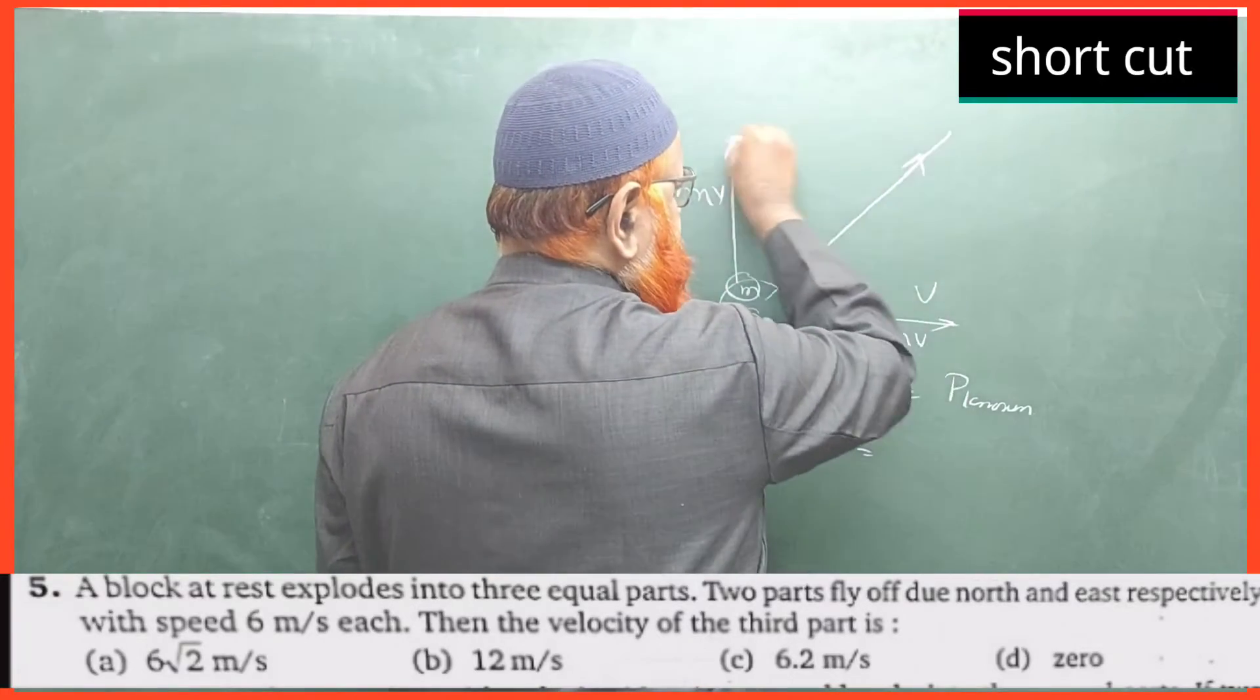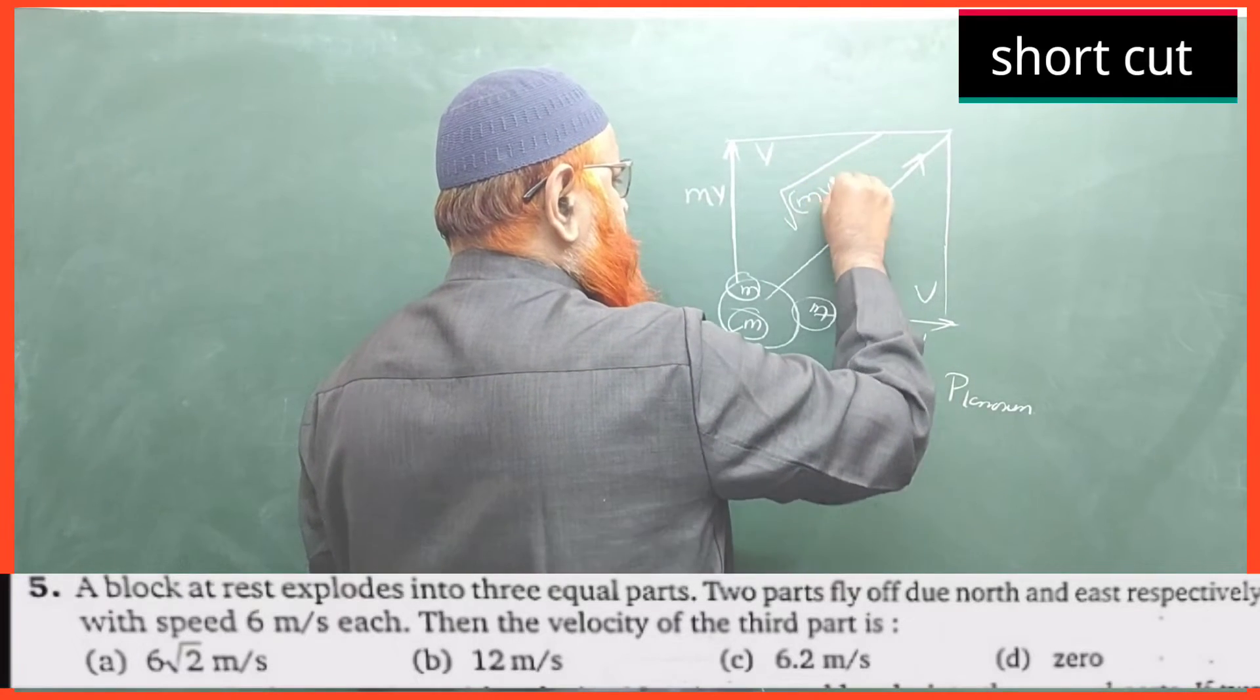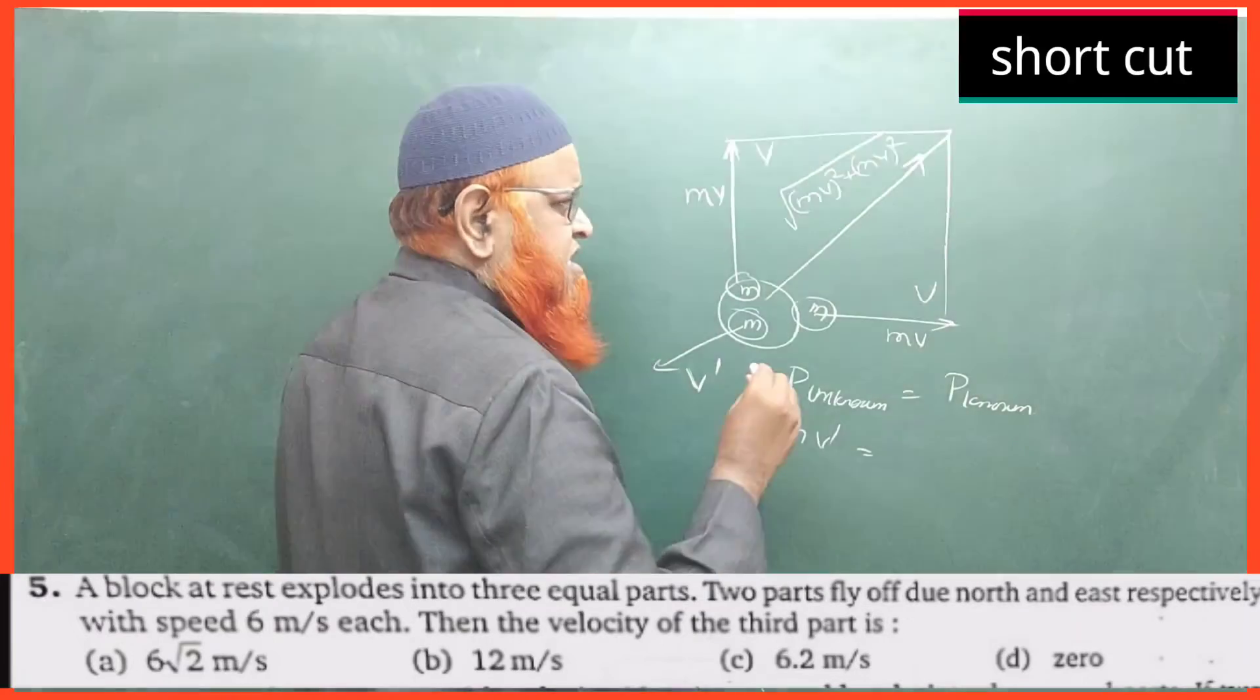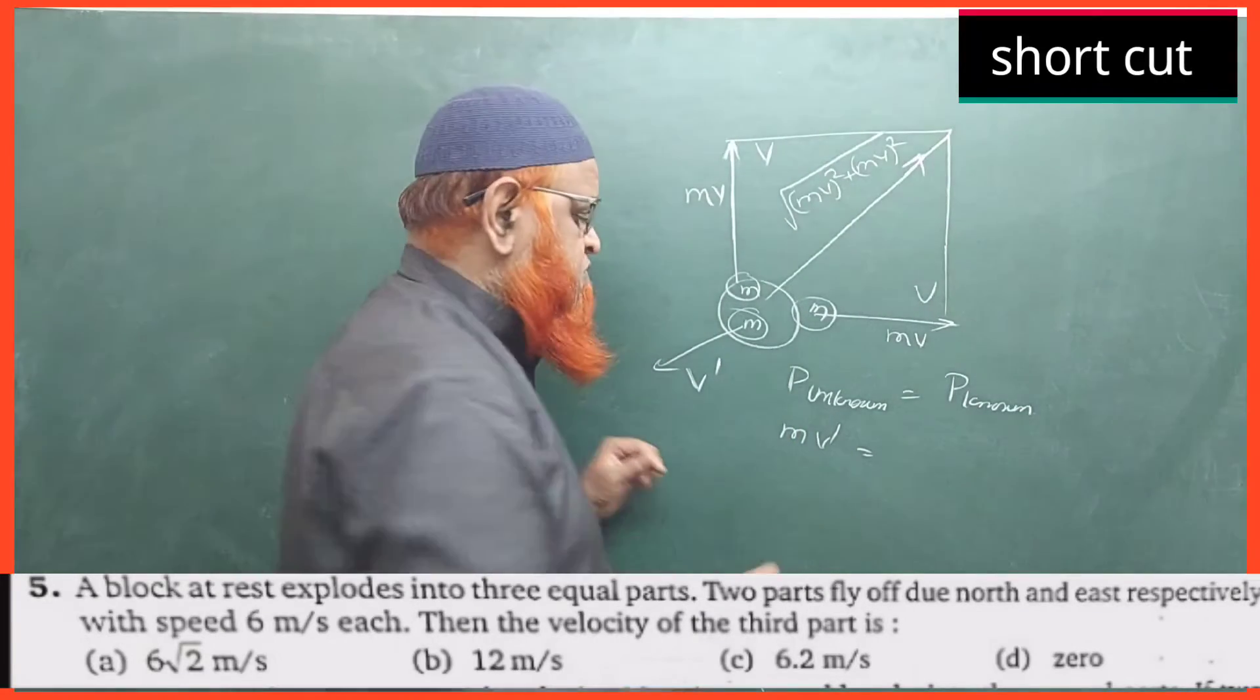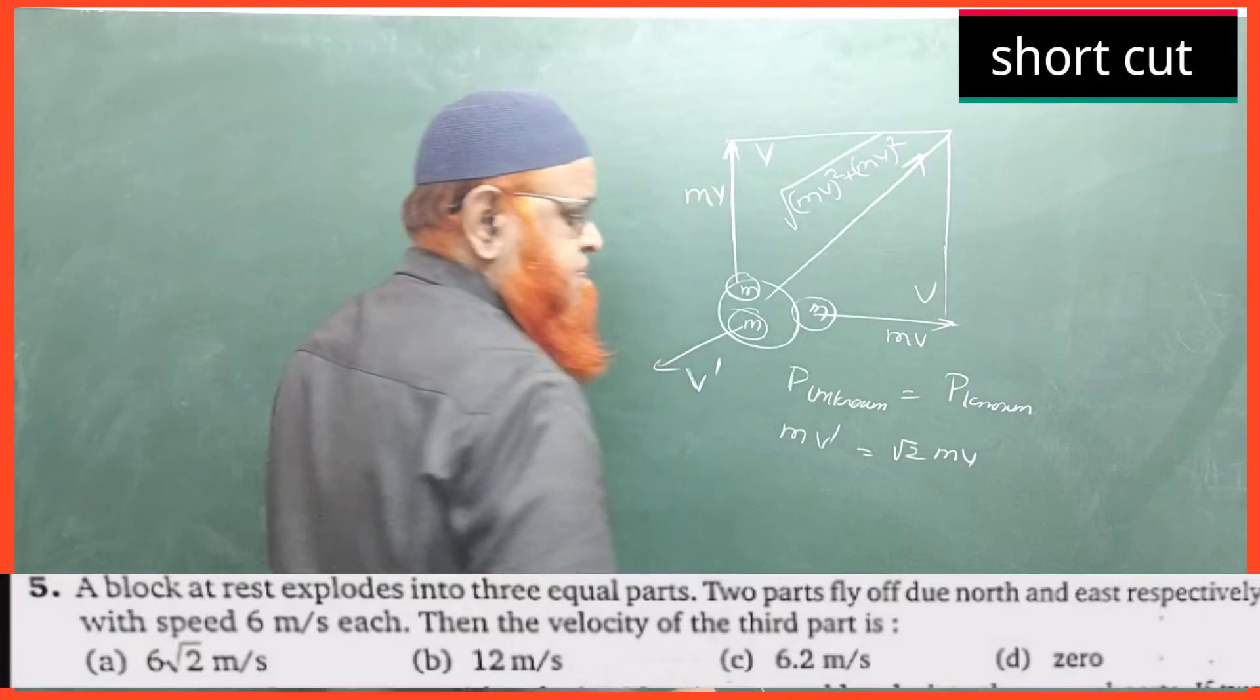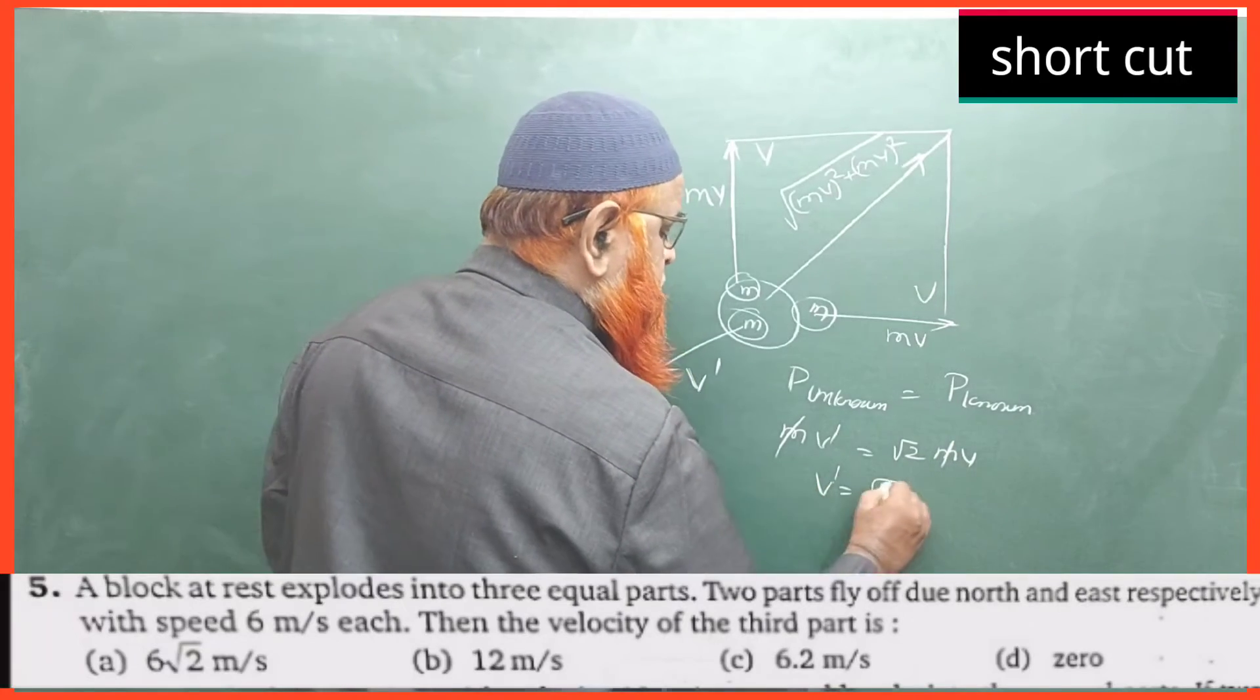If you take Pythagorean theorem, you will get the resultant of these two which is nothing but square root of mv whole square plus mv whole square, which is nothing but root 2 mv. So mass and mass gets cancelled, therefore v dash is equal to root 2 into v.